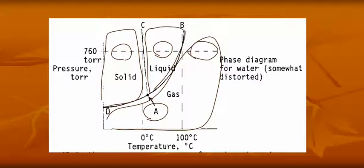There's one point, point A, which is called the triple point, where all three states of matter, solid, liquid, and gas, can coexist in equilibrium.